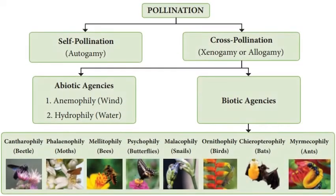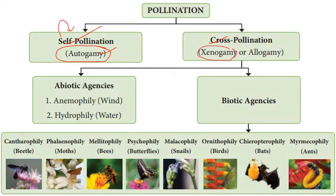Pollination is of two types. The first is self-pollination, also known as autogamy. 'Auto' means self, 'gamy' means marriage — so the pollen fertilizes the same flower. The other type is cross-pollination, also known as xenogamy. 'Xeno' means foreigner or alien. Another term used for cross-pollination is allogamy.